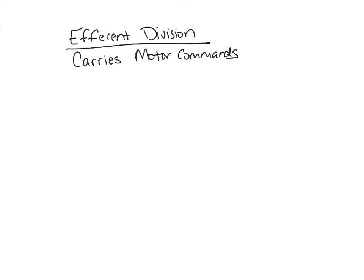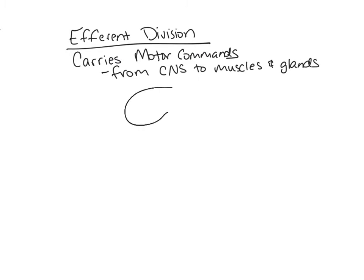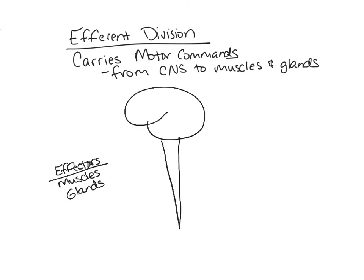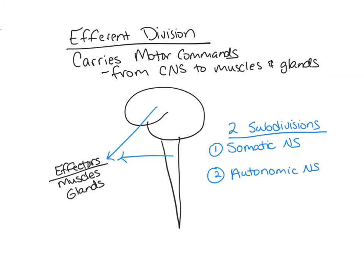The efferent division carries motor commands from the central nervous system to muscles and glands, which are called effectors. Effectors are the target organs that respond by doing something — muscles contract, glands secrete. The efferent division can be divided into two subdivisions: the somatic nervous system and the autonomic nervous system.